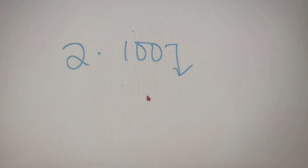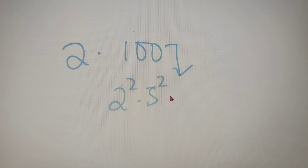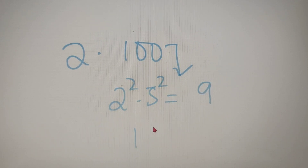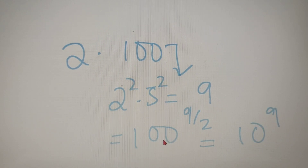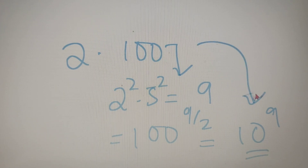For our second example, we have to calculate the product of factors of the number 100. First, we prime factorize: 100 gives 2 squared into 5 squared. So the number of factors is equal to 9. Therefore, the product of factors of 100 is equal to 100 to the power 9 by 2. Now 100 to the power 9 by 2 is equivalent to 10 to the power 9, because 100 equals 10 squared and the 2s cancel, leaving us with 10 to the power 9. So the product of factors of 100 is equal to 10 to the power 9.